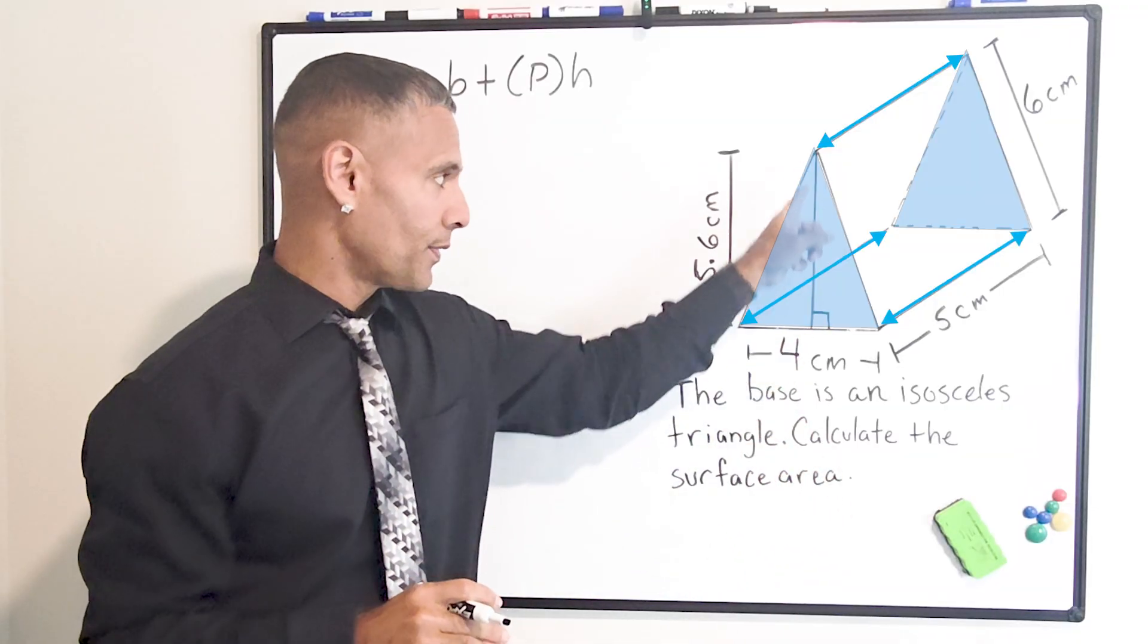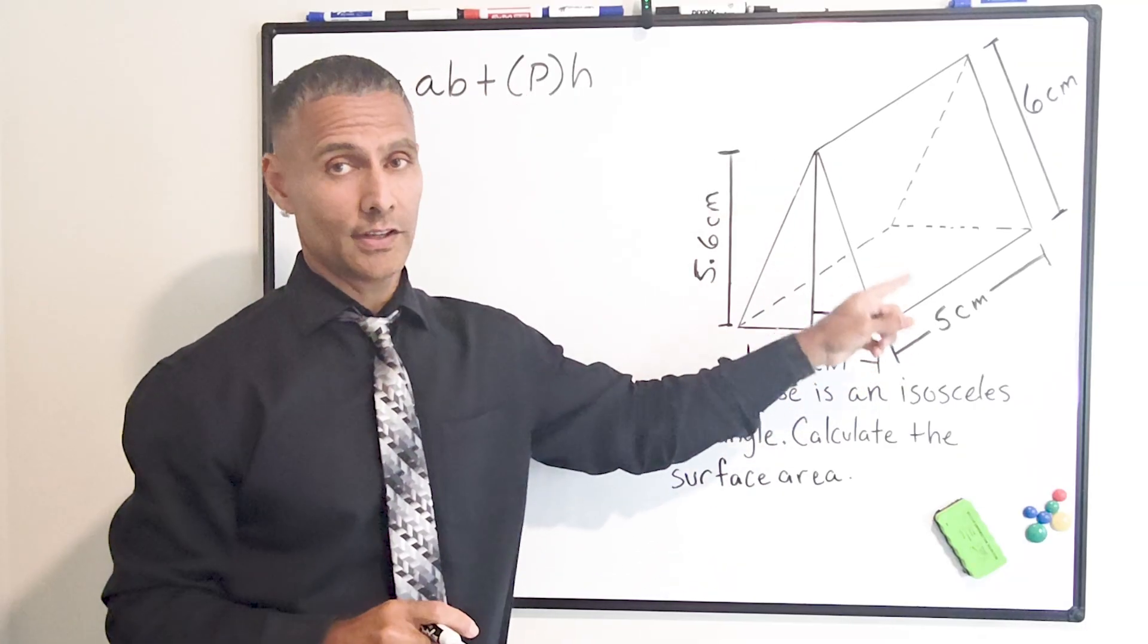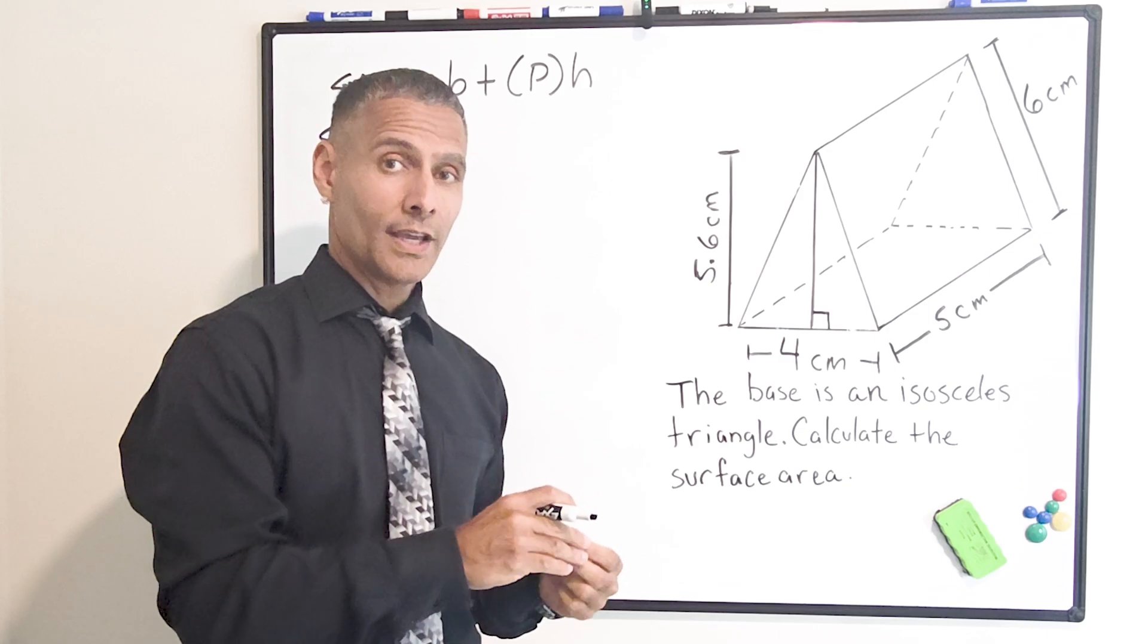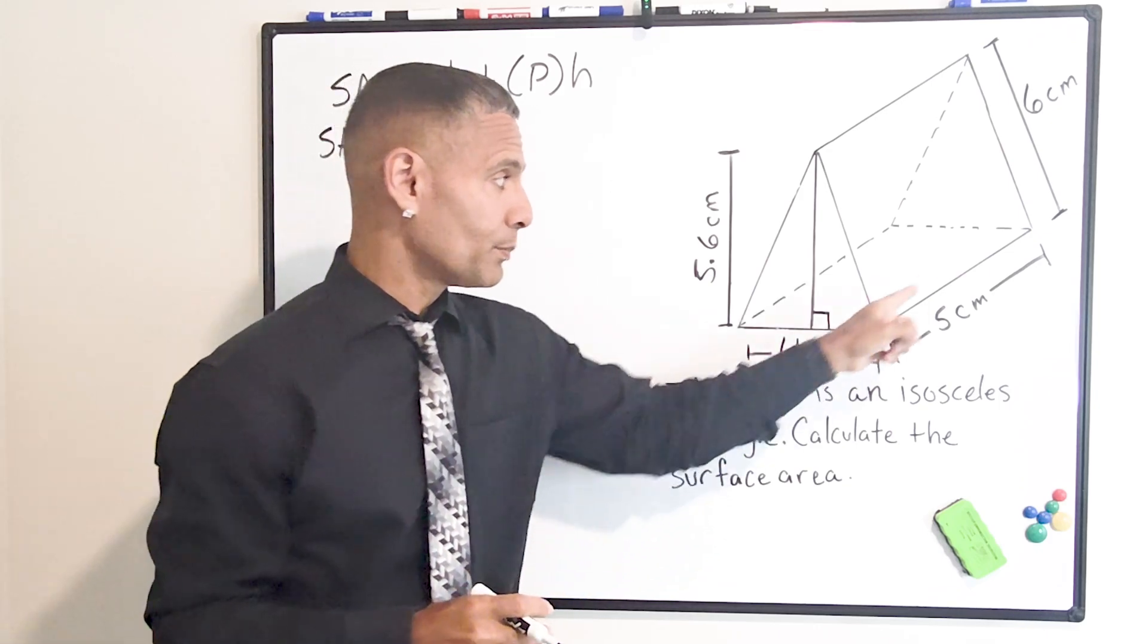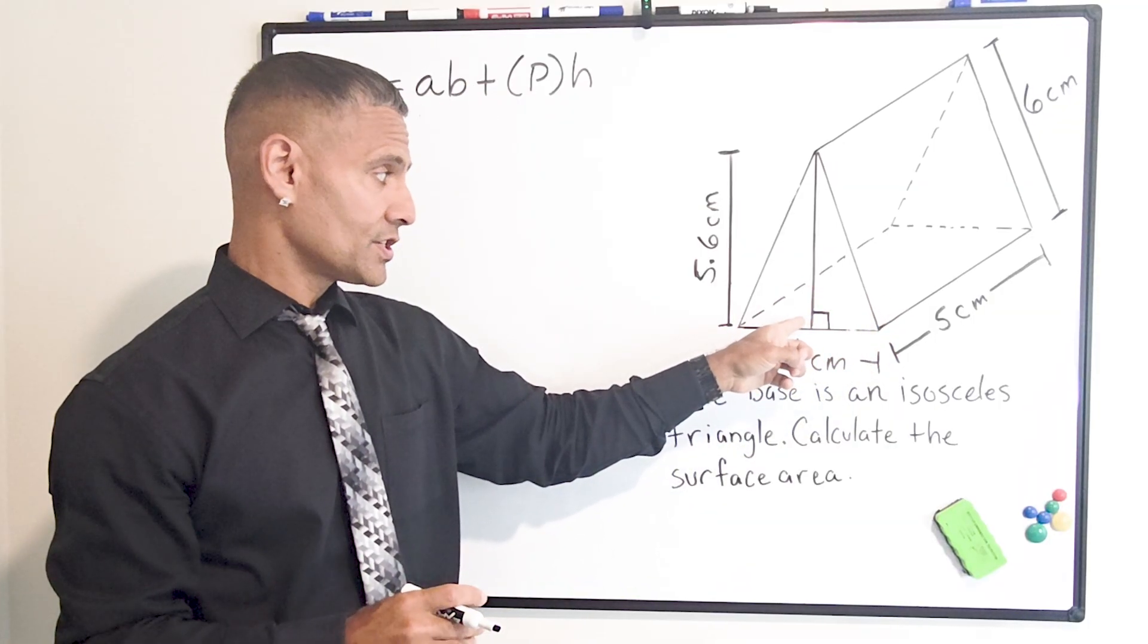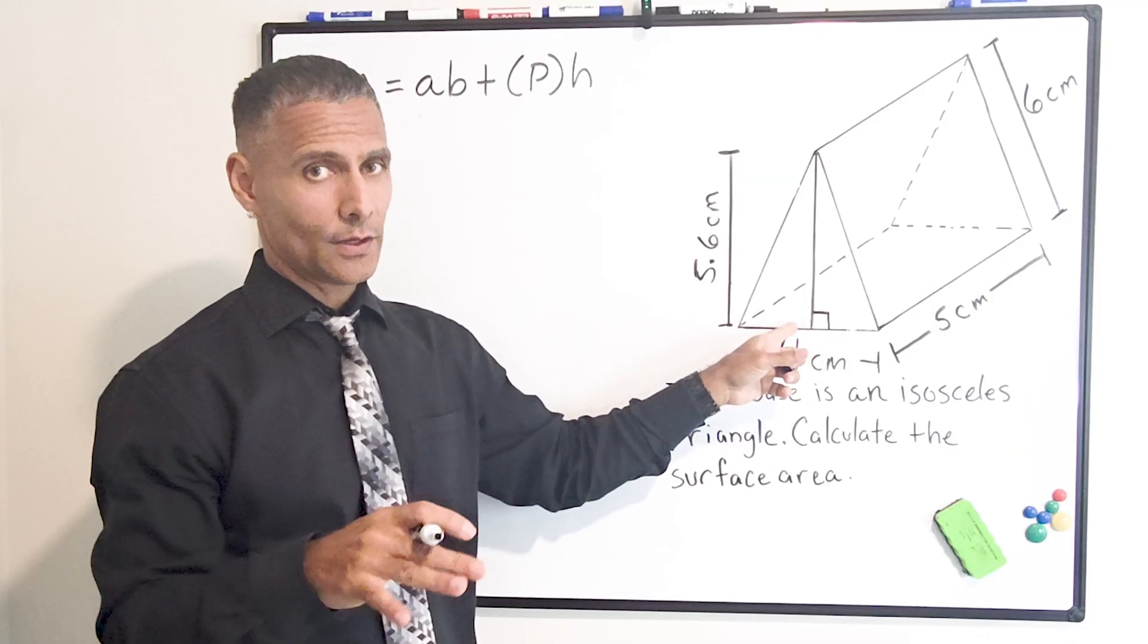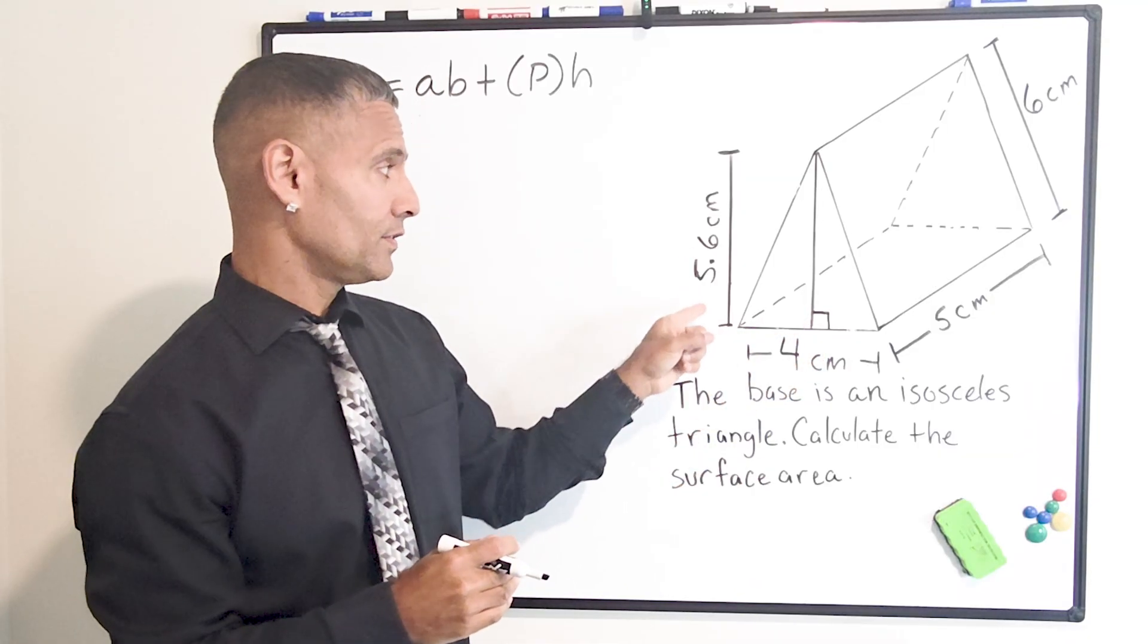We can't use H for this height and H for this height because we have two different lengths here. So we have to use one variable for one of the heights and a different variable for the other height. So the height of the prism is going to stay as H. And if you see A in this equation, it just stands for the height of the triangular surface. So instead of height, we just say altitude.